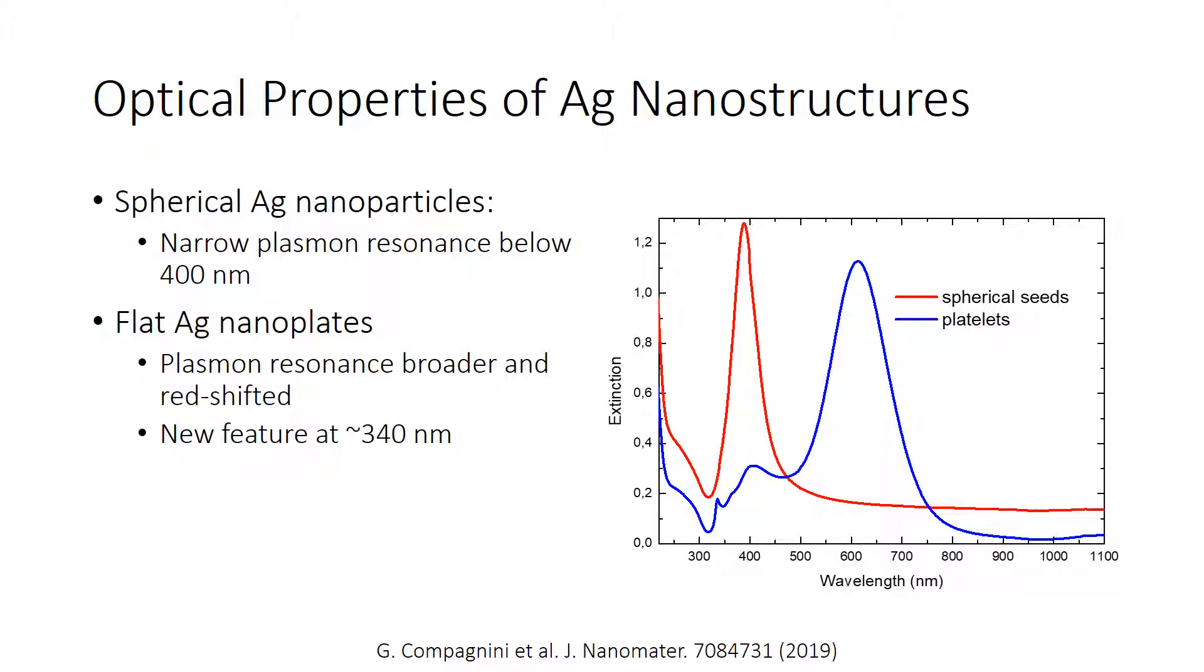The blue curve is a representative absorption spectrum of flat silver nanoplates obtained at the end of the process. We observe that the plasmon resonance is broader and red-shifted with respect to the initial spherical particles. We also observe a new feature around 340 nanometers, which is an indication of anisotropy in the structure and suggests the presence of flat particles.